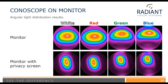This is a standard monitor showing angular distribution results with the monitor displaying a white bitmap, then red, then green, and then blue. The Conoscope results are pretty consistent with respect to all four of those colors. When we add the privacy screen, the luminance drops off as you would expect at larger angles — greater than 30 degrees, for example.